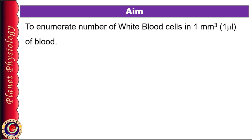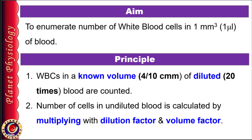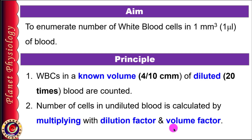The aim of this practical is to enumerate the number of white blood cells in 1 cubic millimeter, i.e. 1 microliter of blood sample. As we have seen in the previous video on RBC count, the same principle of hemocytometry is also applied for WBC count. First, WBCs are counted in an unknown volume of diluted blood — typically in a 4/10 cubic millimeter volume with blood diluted 20 times. Then WBCs in 1 cubic millimeter of undiluted blood are calculated by multiplying with the appropriate volume factor and dilution factor.